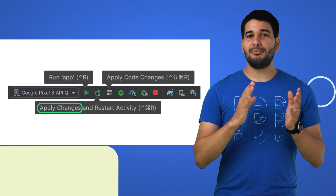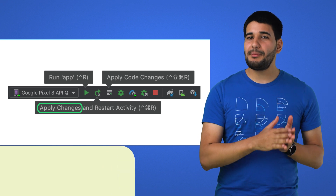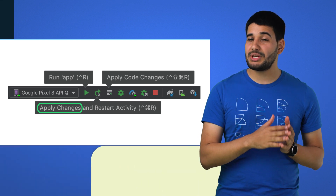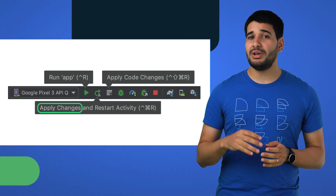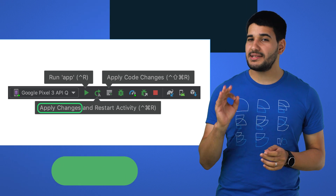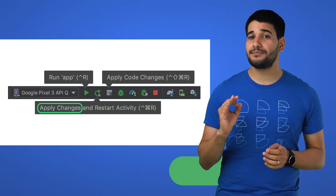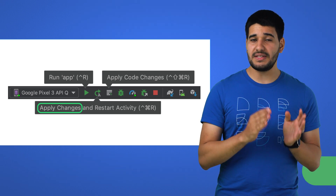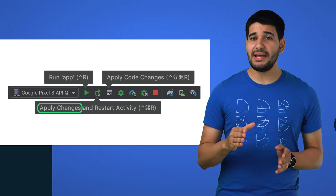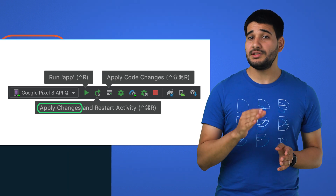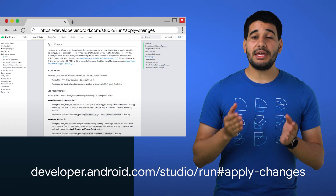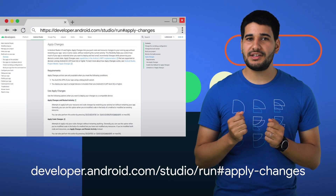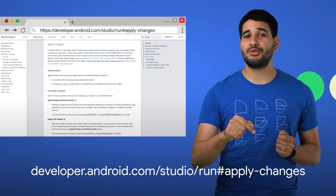It uses platform-specific APIs from Android Oreo and higher to ensure reliable and consistent behavior. Unlike Instant Run, Apply Changes does not modify your APK. You can read more about it on our blog post linked in the description below.